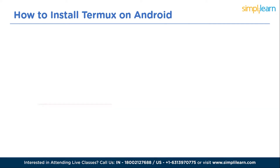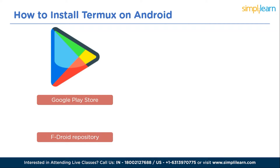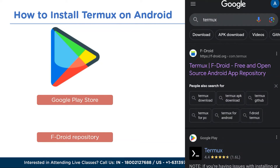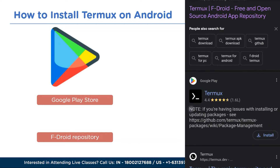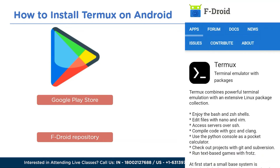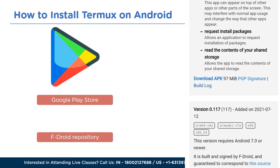Termux can be easily installed from either the Google Play Store or the F-Droid repository. I'll show you the F-Droid website and mention the link in the description box so you can download the Termux APK. On the mobile device demo, you can see the F-Droid repository link — scrolling down reveals the download option at 97 MiB. Simply click it and the download will start.